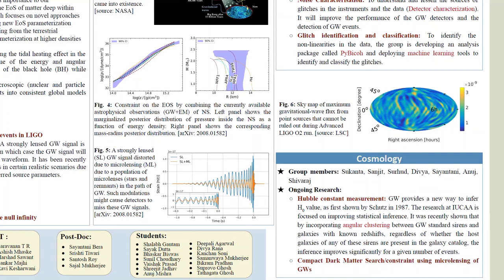The research at IUCAA is focused on improving this inference by incorporating some cosmological information that we have like angular clustering between galaxies. Even though we don't know the exact redshift of the source we may still very accurately find the Hubble constant value if we have a large number of gravitational wave events.